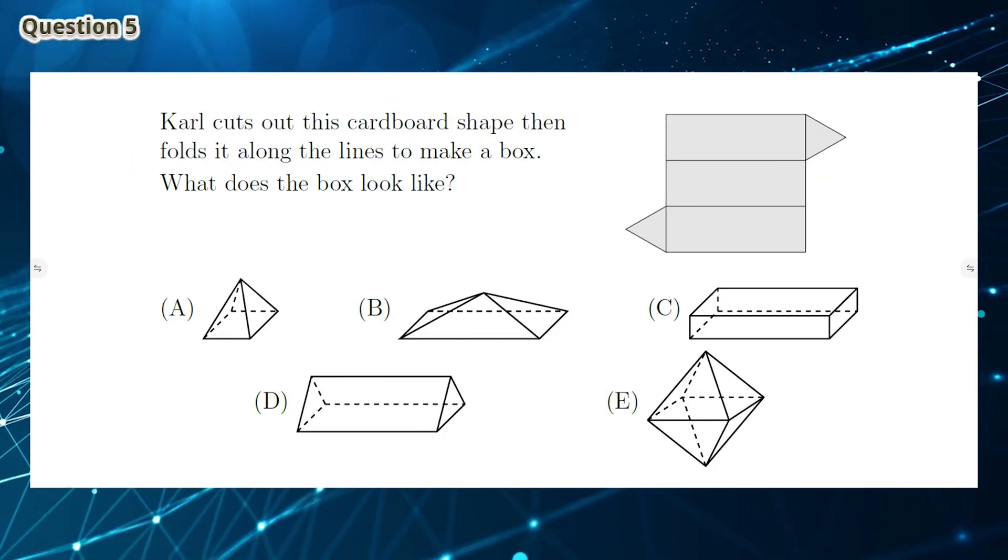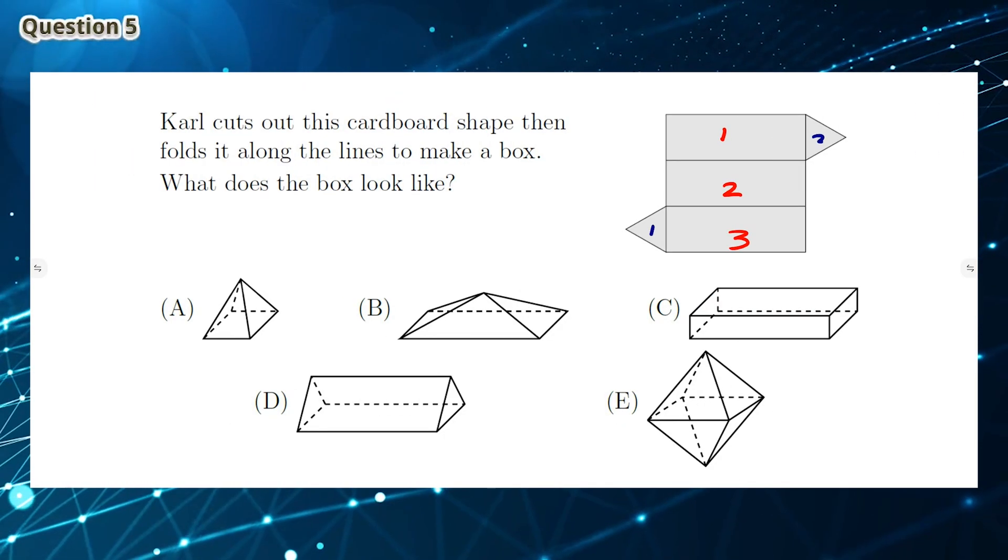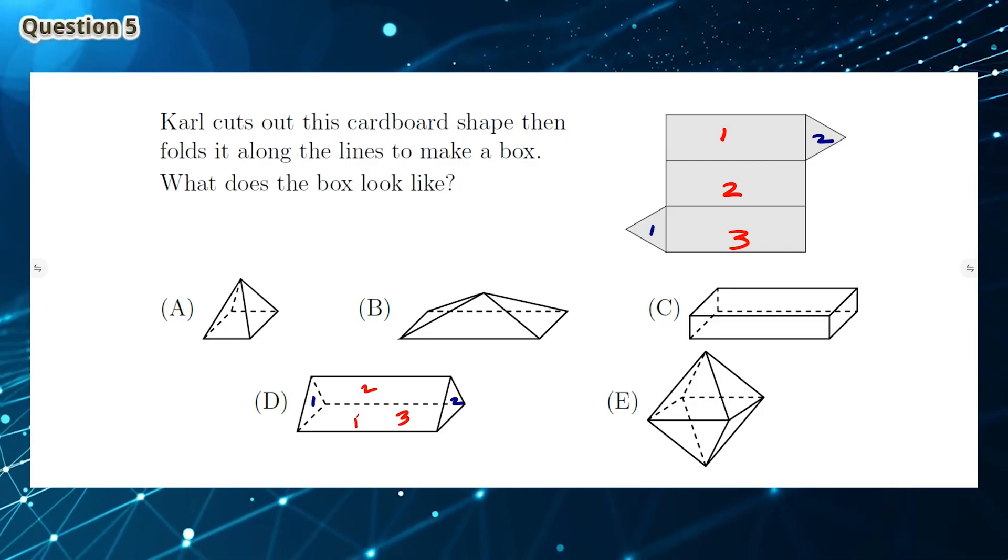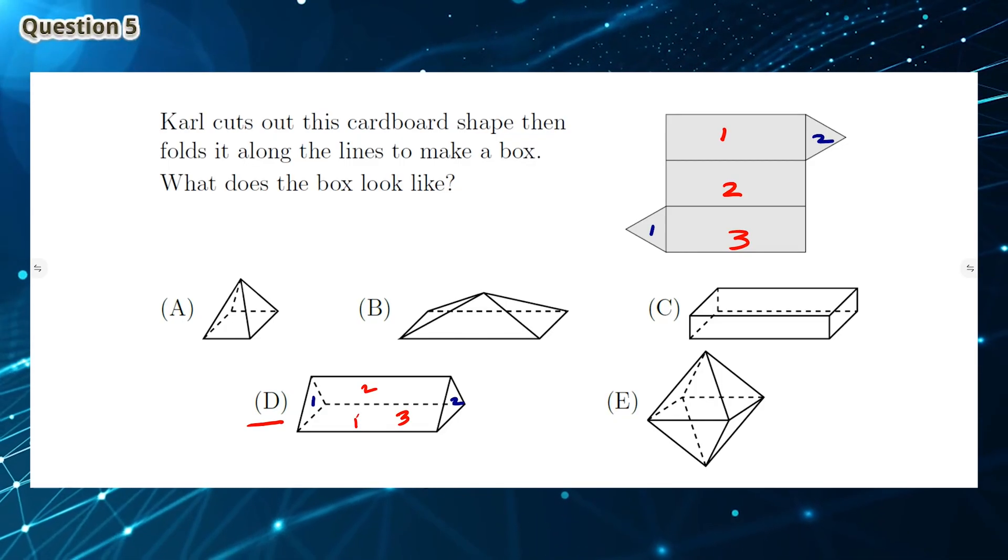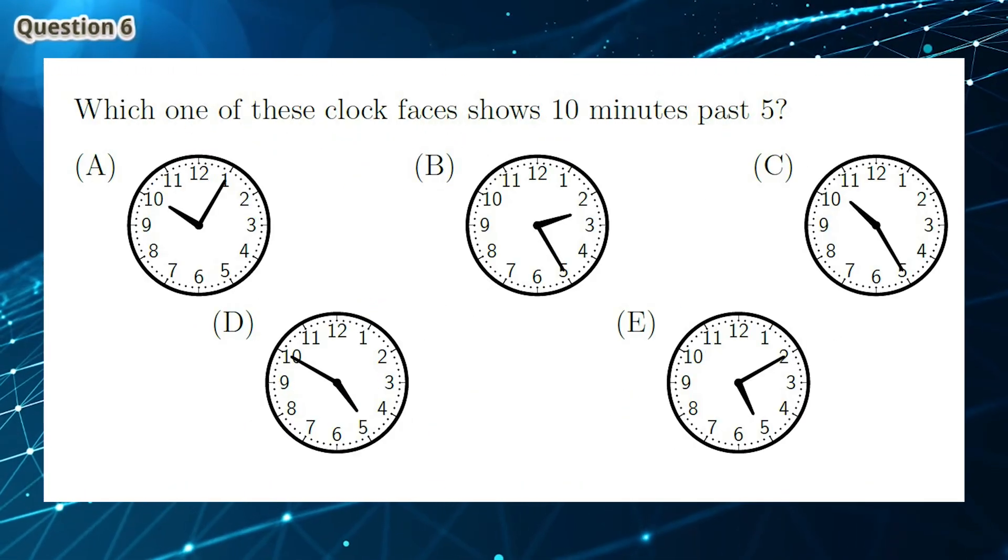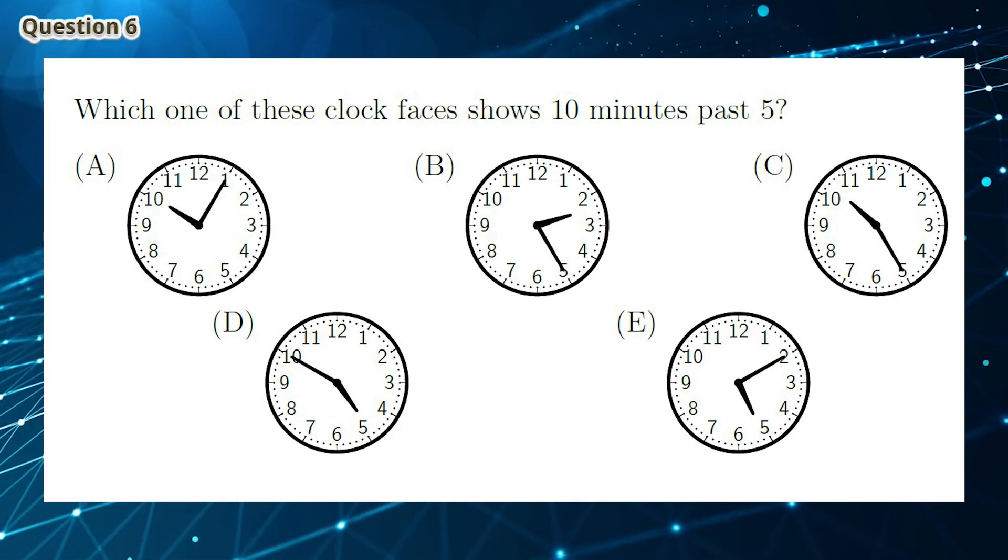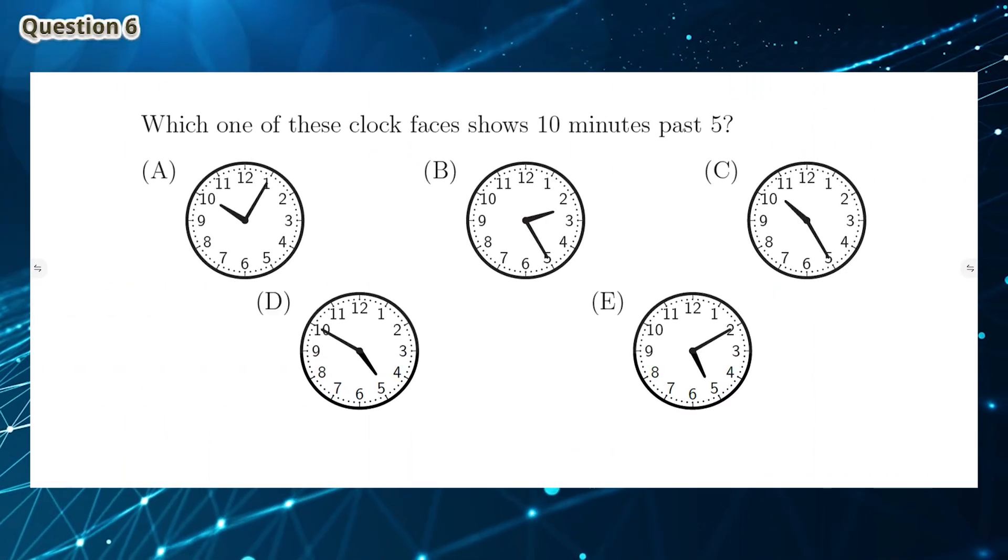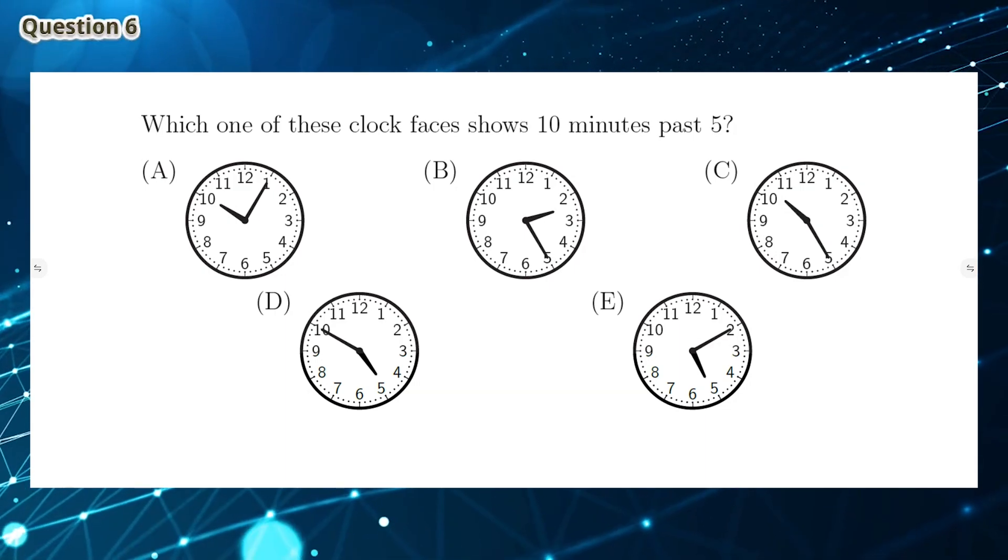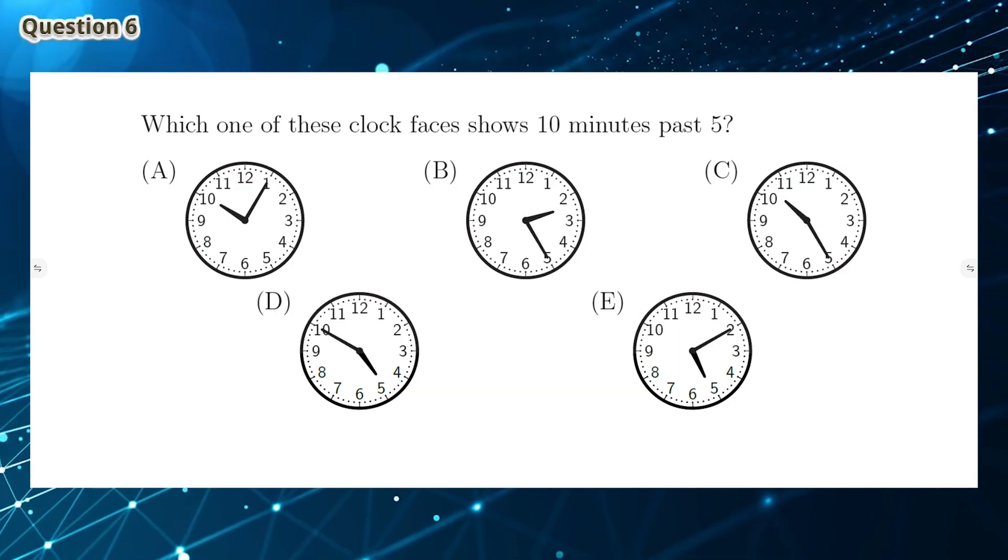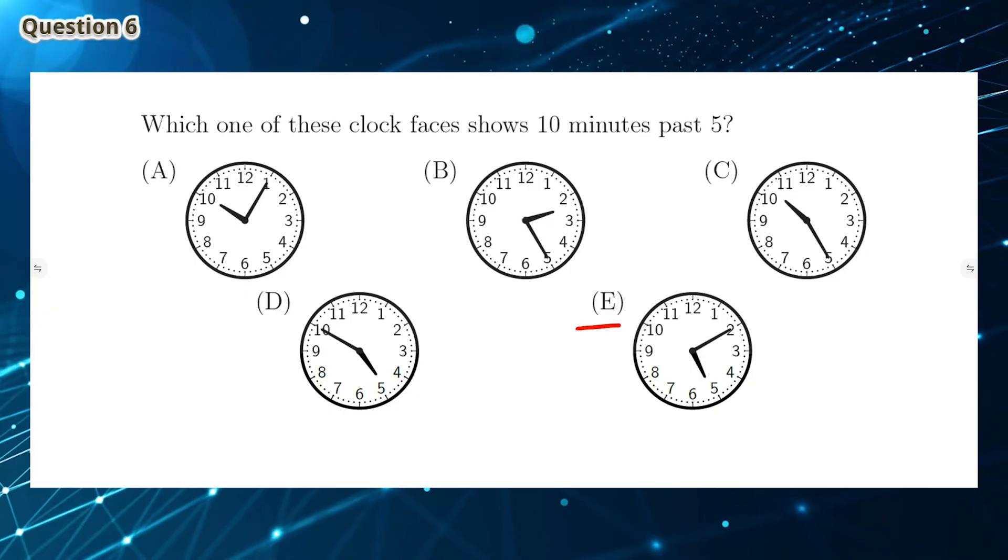Question 5: The cardboard net has 3 rectangles and 2 triangles. The only answer option that matches this description is option D, so the answer is D. Question 6: We notice that option E correctly shows the time 10 minutes past 5, or 5:10, which means the answer is E.